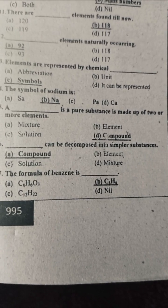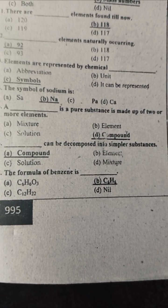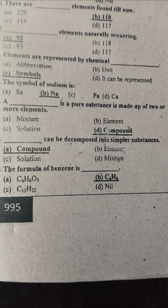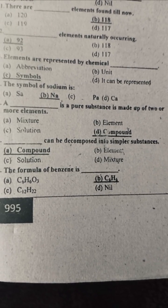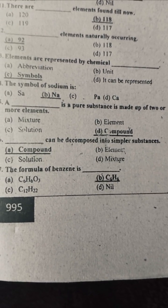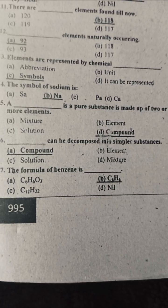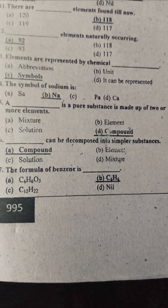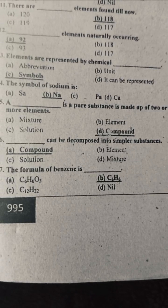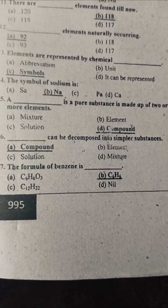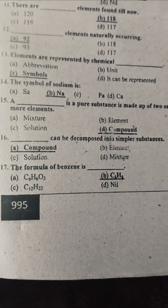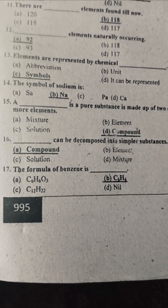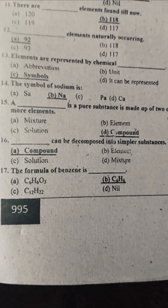A substance made of two or more elements is called a compound. The correct option is compound. A compound can be decomposed into simpler substances. The formula of benzene is: C6H6O3, C6H6, C12H12, or none. The correct option is B — C6H6.